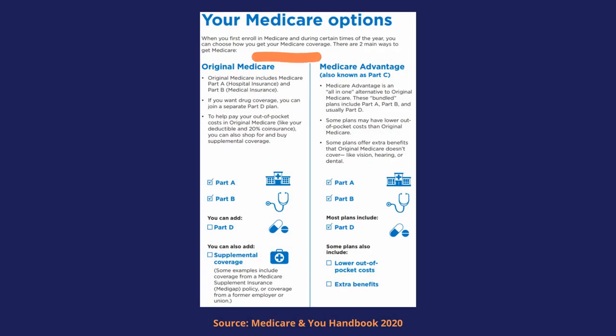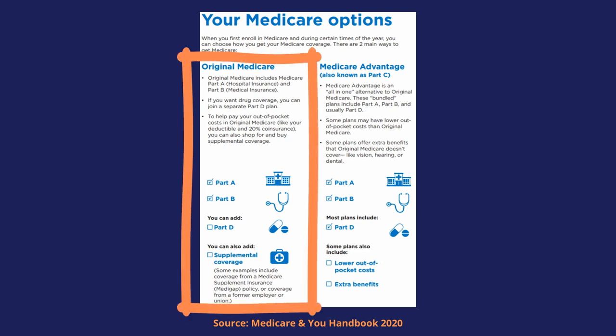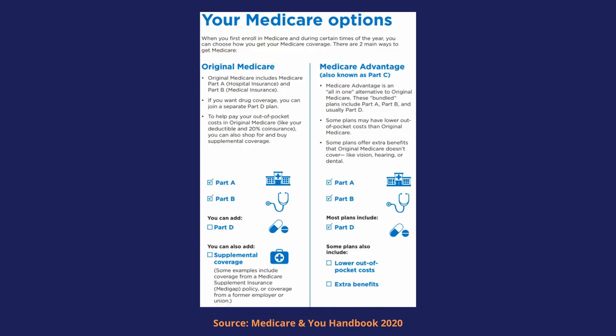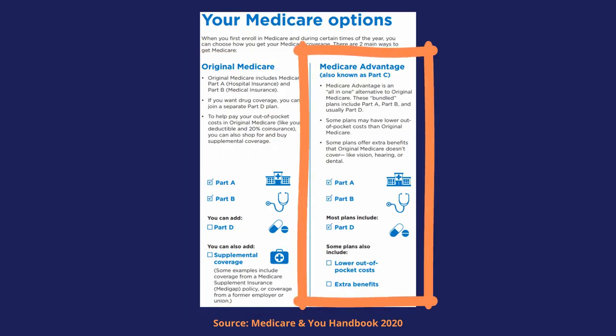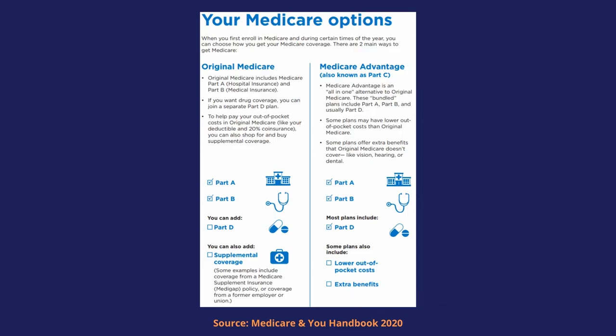A quick review of our Medicare options: on the left we have original Medicare, which is Part A and B through the federal government. You'd typically add on a standalone prescription drug plan and a Medicare supplement. On the right side we have Medicare Advantage, or Part C, where you receive your Part A and B benefits through a private insurance company, and they typically include prescription drug coverage.